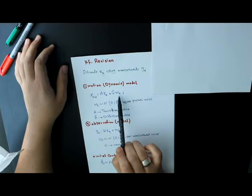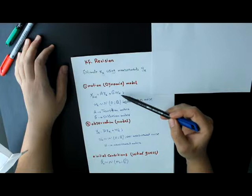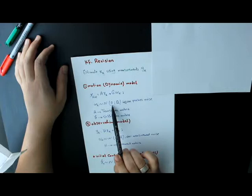These noises, as a rule in Kalman filter, are considered to be Gaussian distributed noises with a mean of zero and covariance matrix Q. It's called process noise.